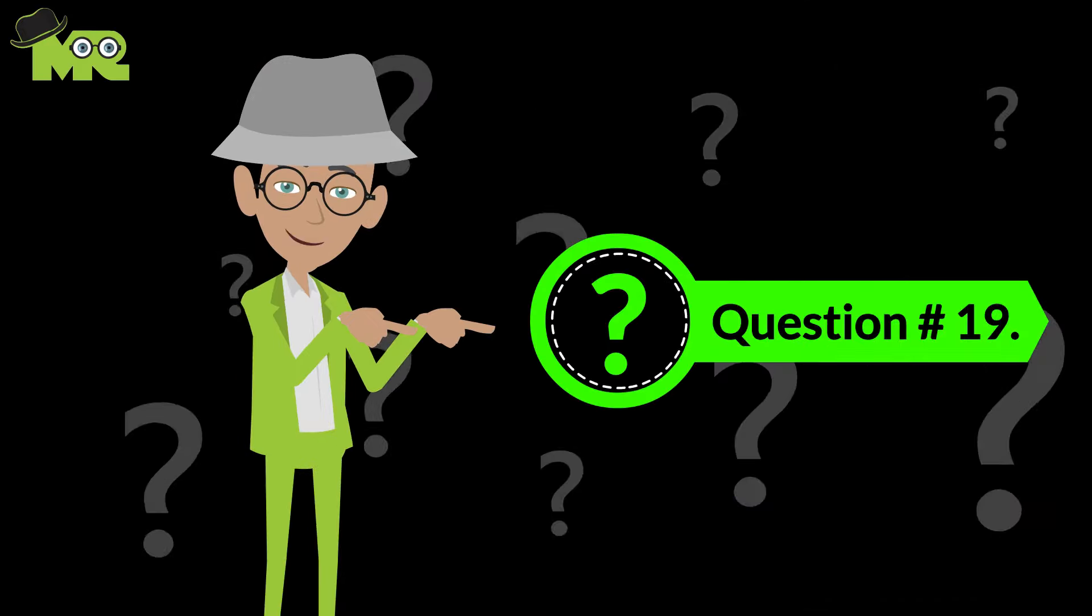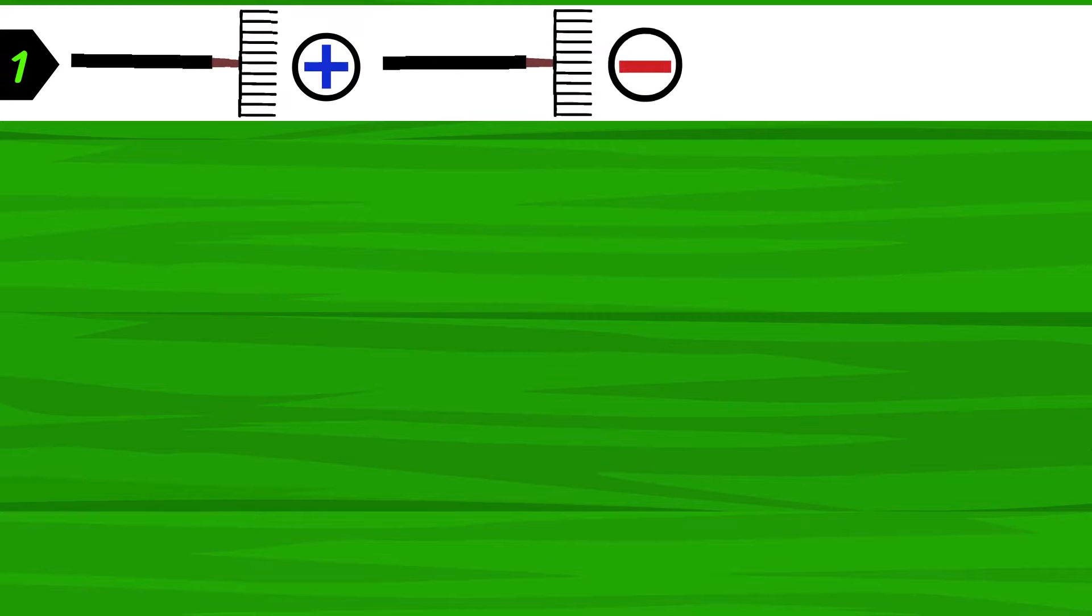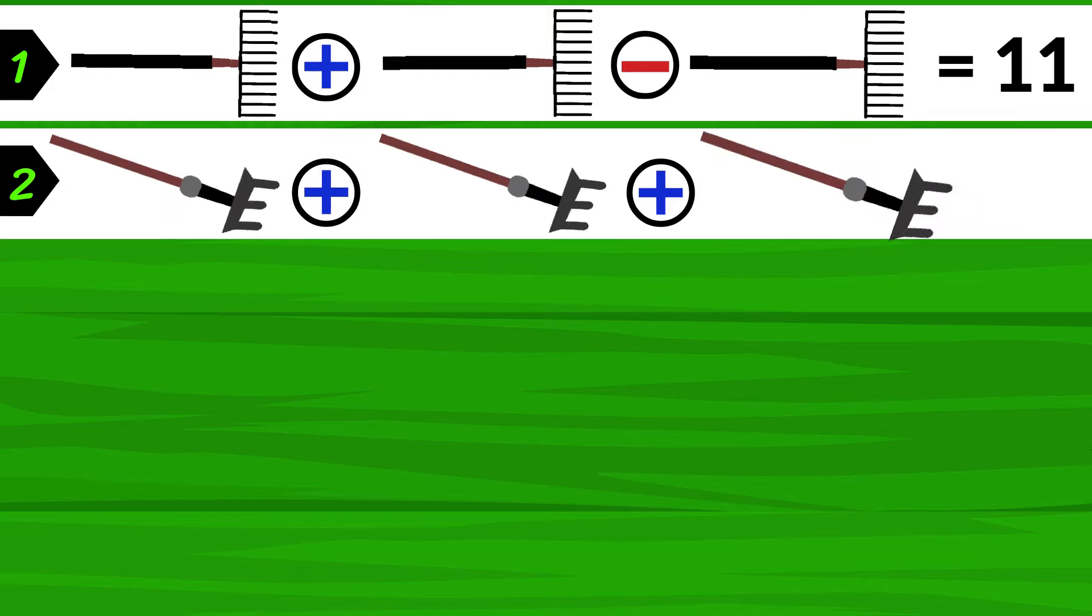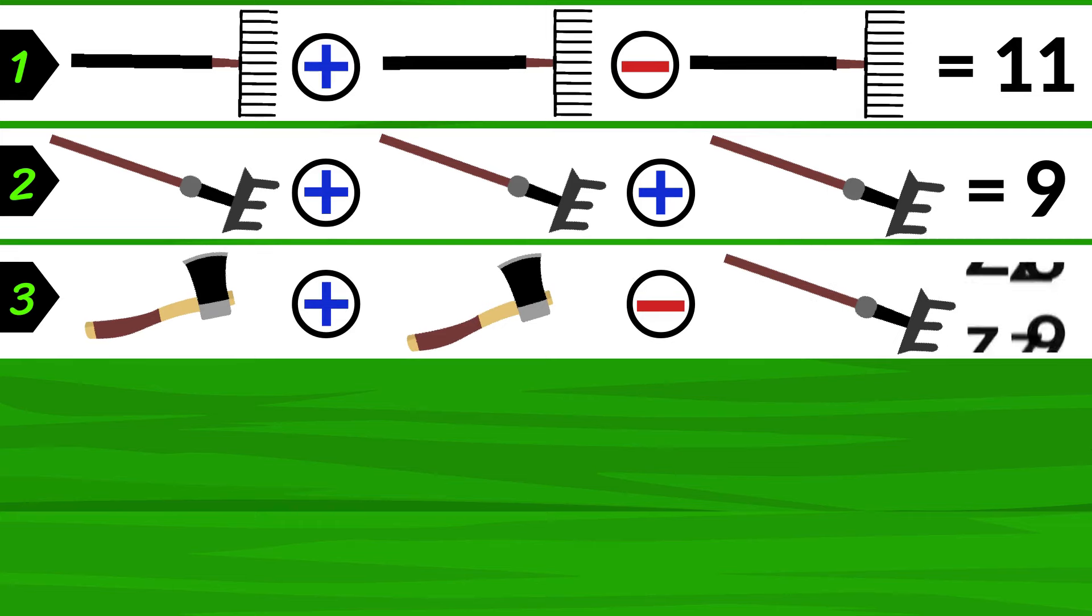Let's go to question 19. Friends, how many of you can find the answer to the gardening tools puzzle? The first equation is a rake plus a rake minus a rake equals 11. The second equation is a fork plus a fork plus a fork equals 9. The third equation is an axe plus an axe minus a fork equals 7.